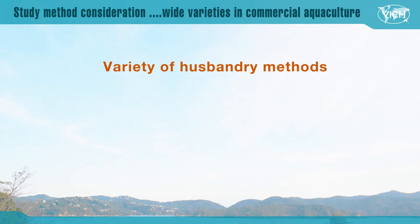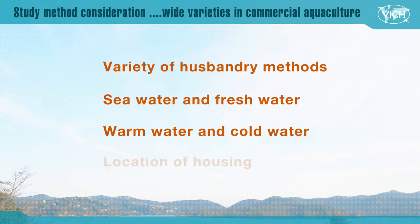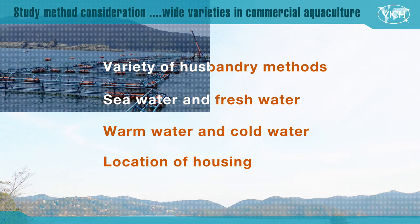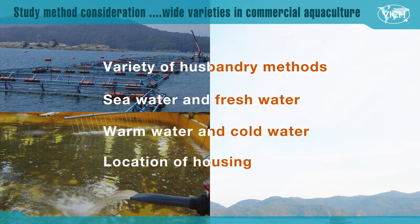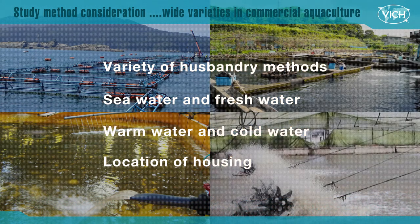That uniqueness includes a variety of husbandry methods, major differences in living conditions including seawater and freshwater, as well as warm water and cold water. For current aquaculture, the location of housing also differs, such as fish pens in the sea, a tank or pool on the ground with seawater, or a pond or pool for freshwater fish.